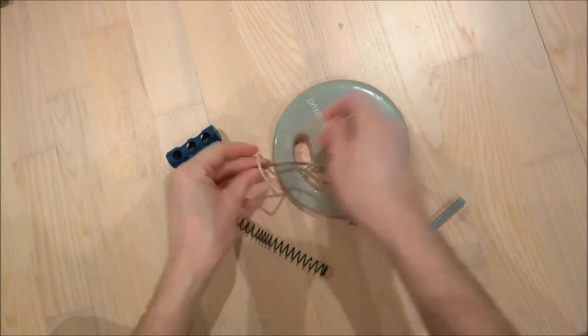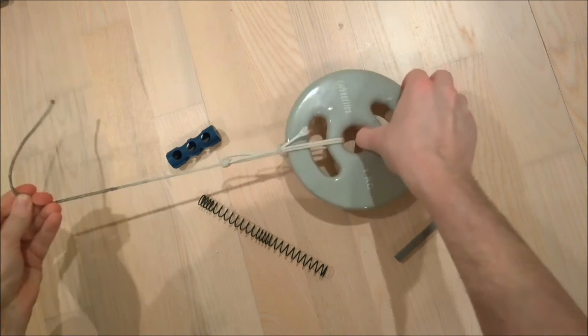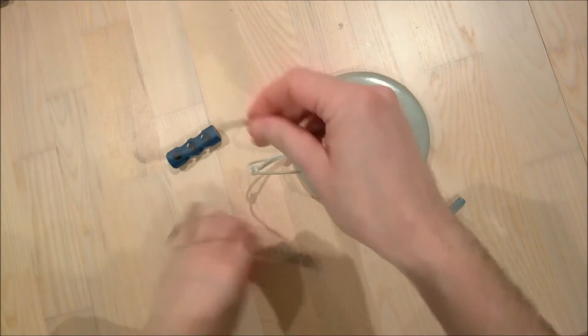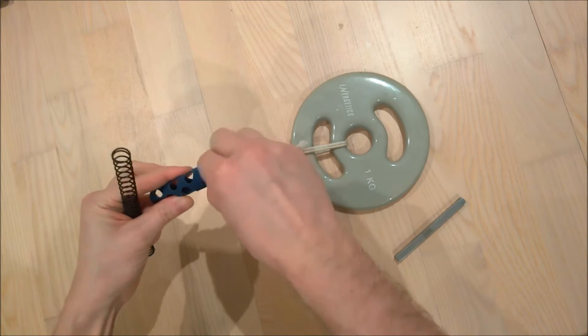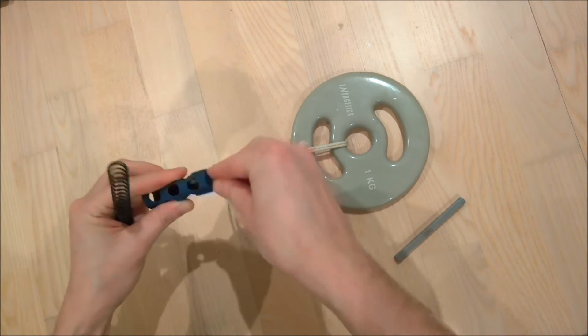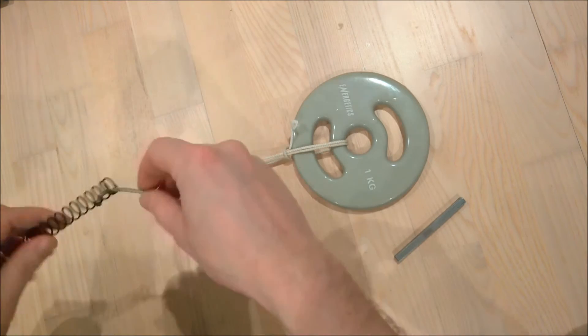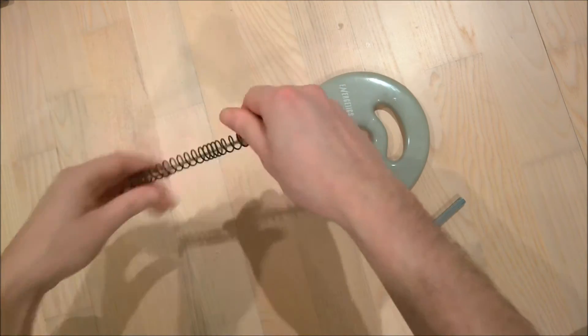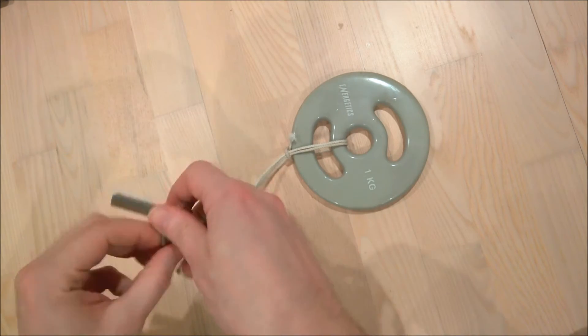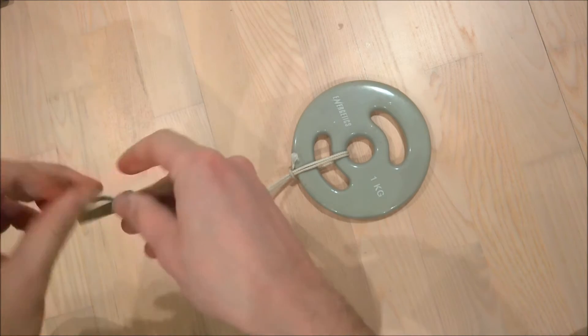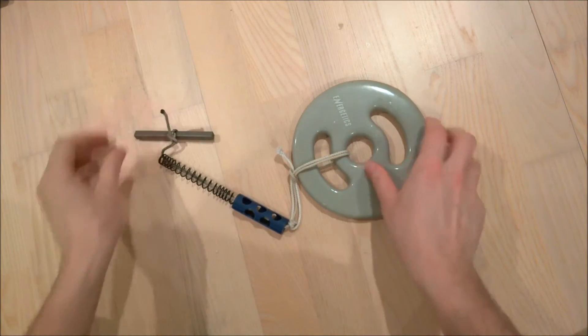To make the testing rig tie a piece of string to some weights. Pull the string through an airsoft piston and through the spring you want to test. Then tie the other end to a piece of metal rod, for example a screwdriver. When it's done it should look like this.